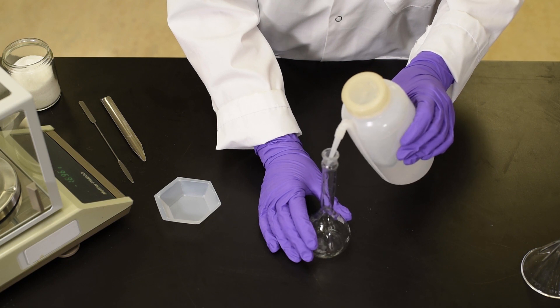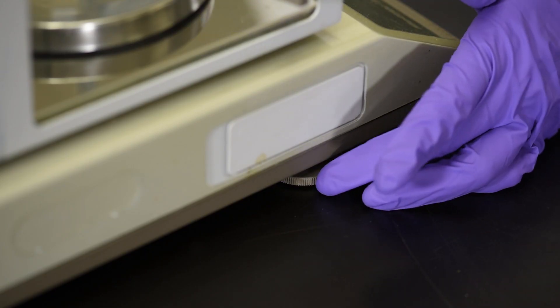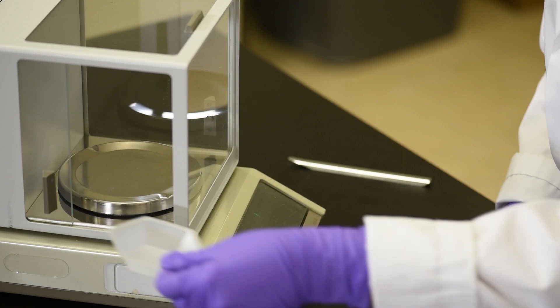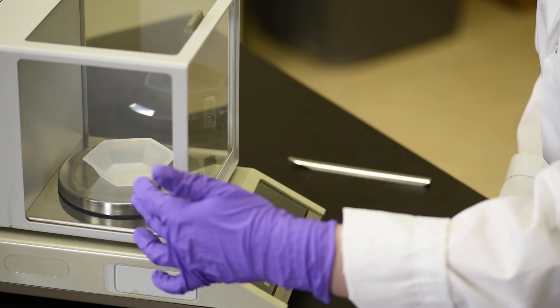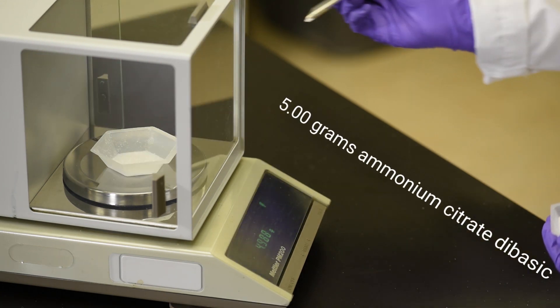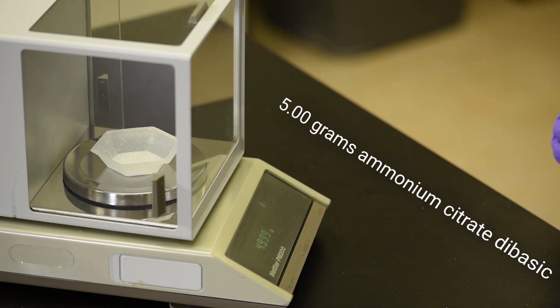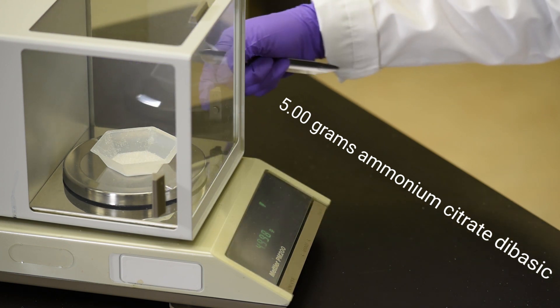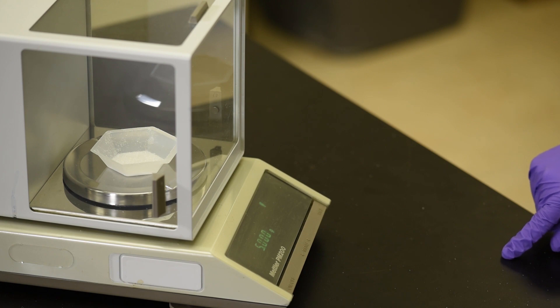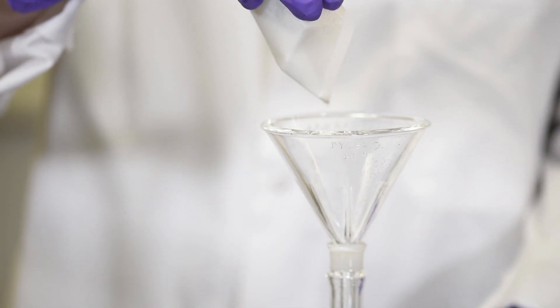First, I partially fill my flask with distilled water, the solvent. Next, I make sure my analytical balance is level. I place my weighing dish on the balance, close the glass doors, and set the balance to zero. I weigh out 5.00 grams of ammonium citrate dibasic, the solute, into my weigh dish, and again I close the doors to check the final reading on the balance.